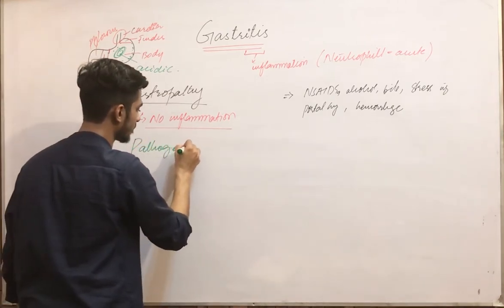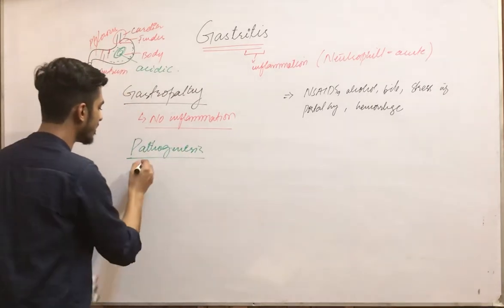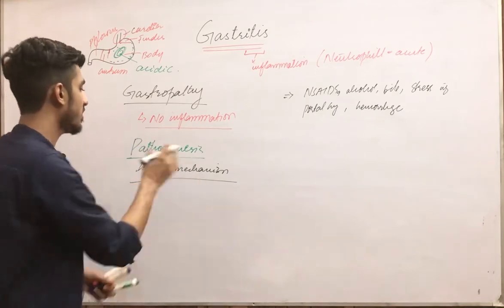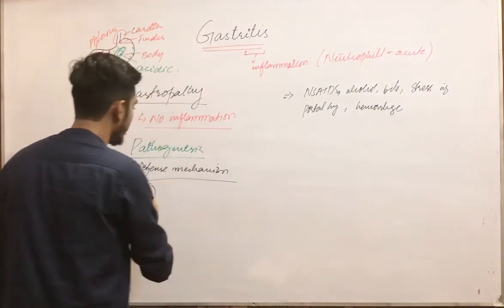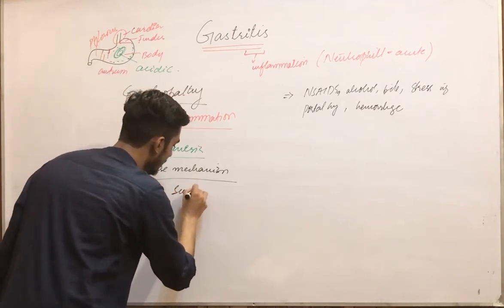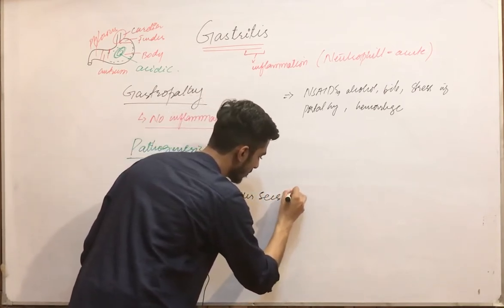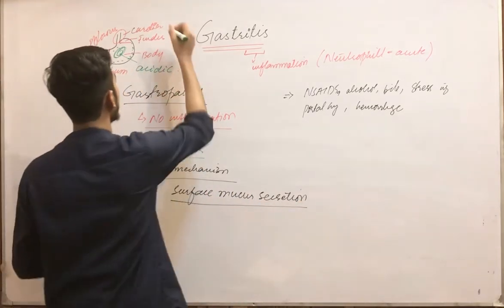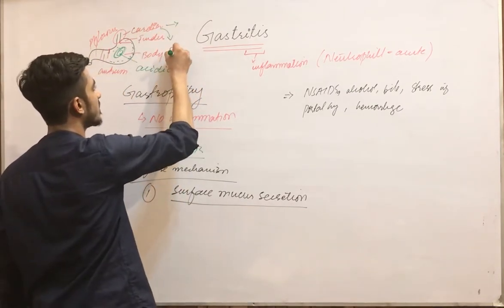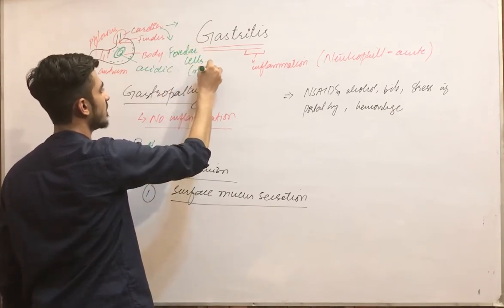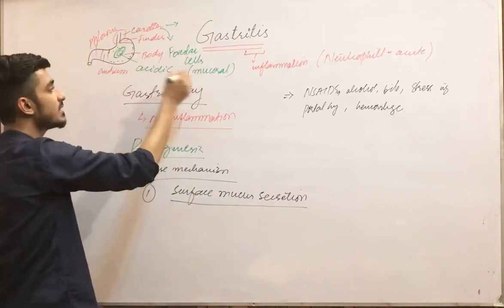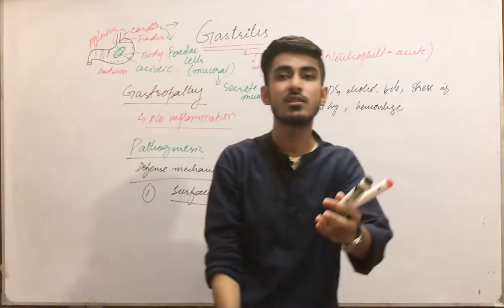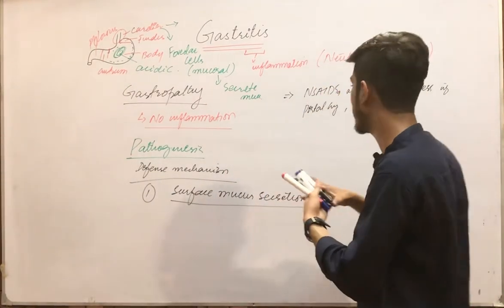The first defense mechanism is surface mucous secretion. In the cardia region, there are cells known as foveolar cells, or mucosal cells, which secrete mucus. This mucus forms a protective layer or covering over the epithelium of the stomach, shielding it from acid.